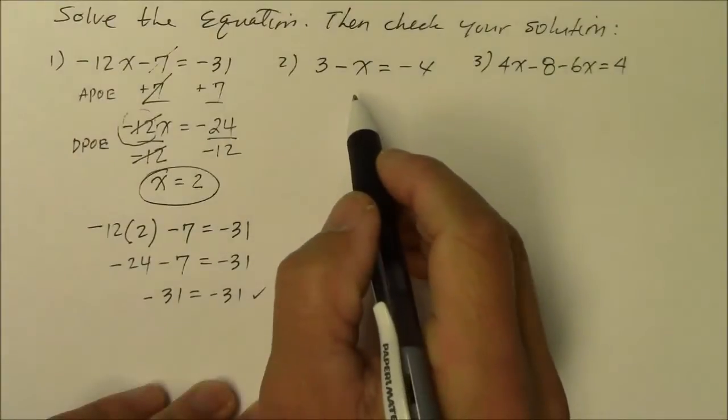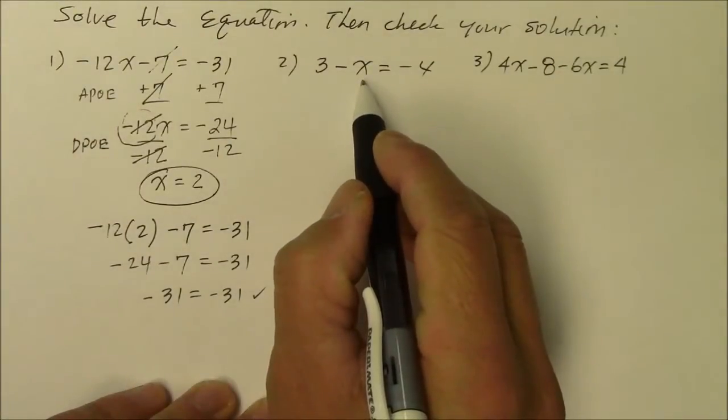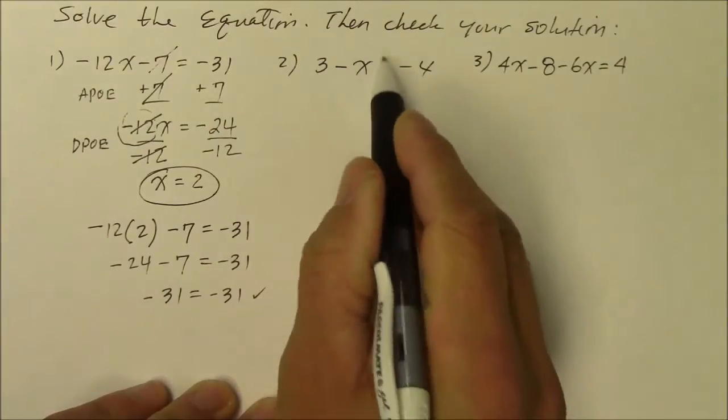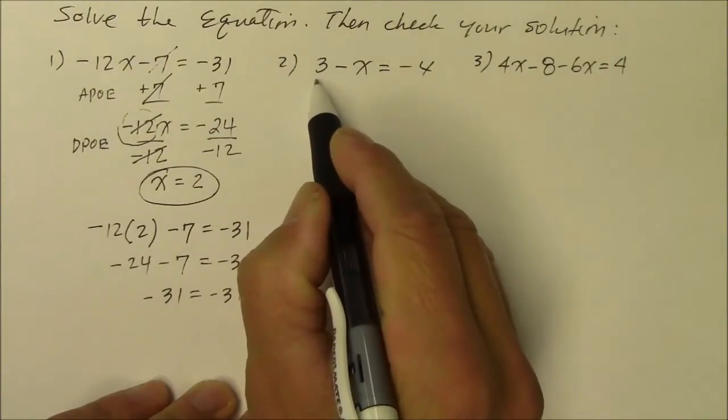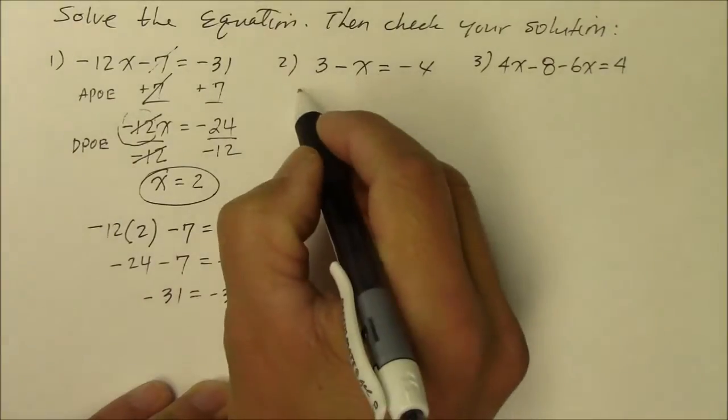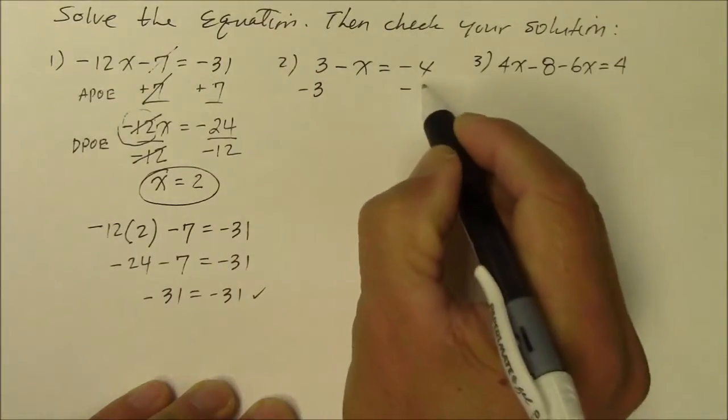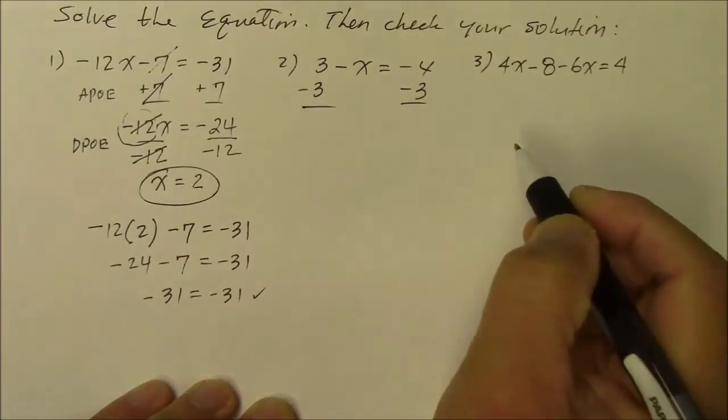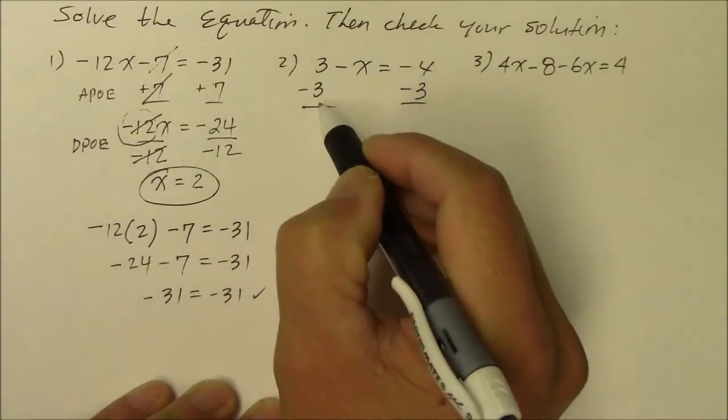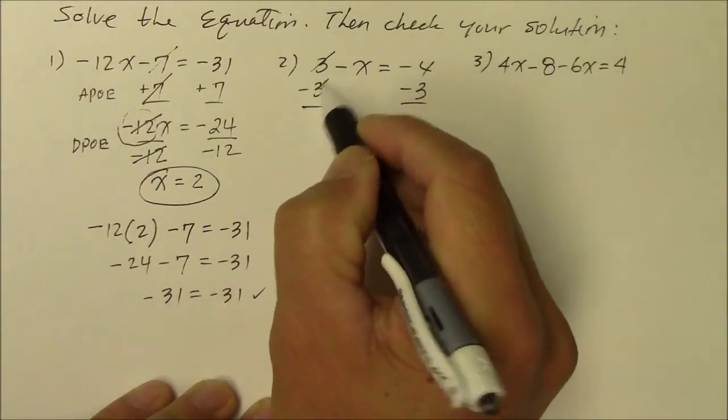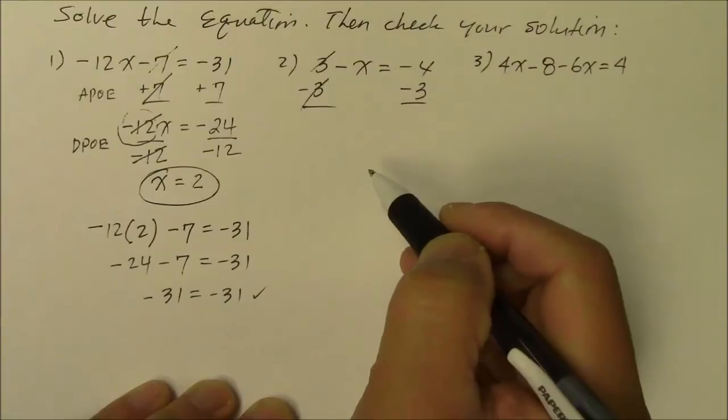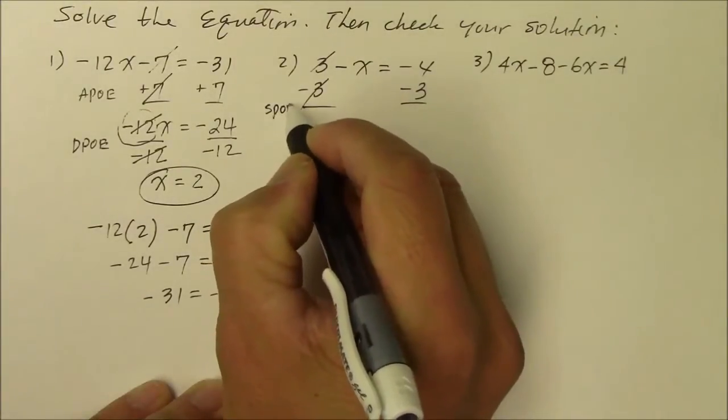I hope you didn't get confused because there was an x on the right side of this expression. What you have to do is move the 3. What's the opposite of 3? Minus 3. And you have to do it to both sides of the equation. So as a result, 3 and negative 3, they're additive inverse. They become 0, they cancel. And what did I do? Subtraction property of equality.